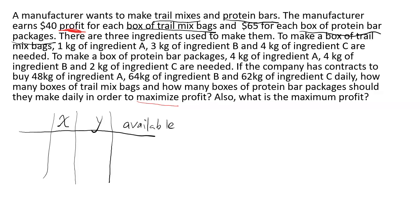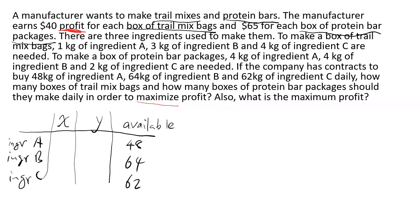The resources that are limited: the company has contracts to buy 48 kilograms of ingredient A, 64 kilograms of ingredient B, and 62 kilograms of ingredient C daily. So clearly ingredients A, B, and C are the limited ones, and their limited daily availability is 48, 64, and 62 respectively.